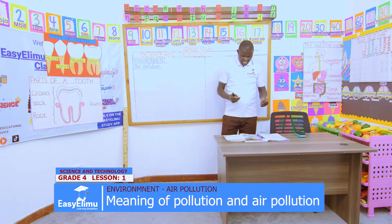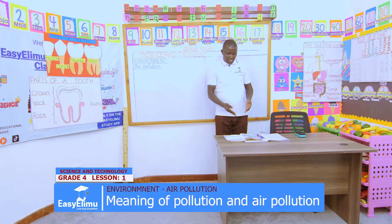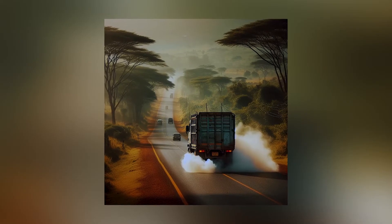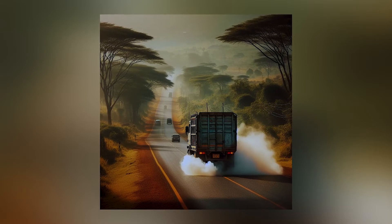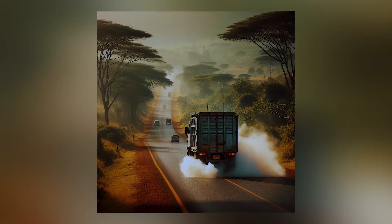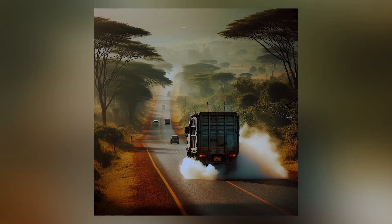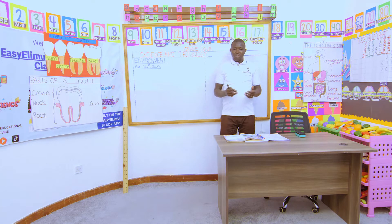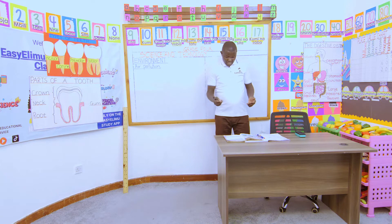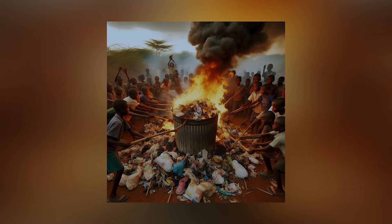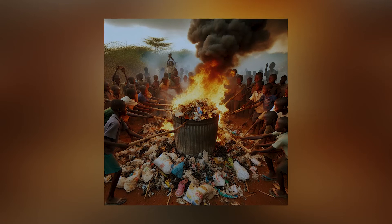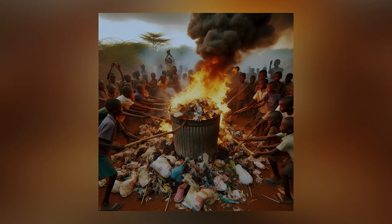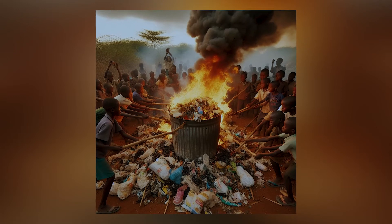And you, James, in the second picture — what can you see? A vehicle, but emitting smoke from the exhaust. That is correct. And you, Victoria, on the third picture — what can you see? Plastics piled up in a bucket, but they are being set on fire and they are emitting smoke. That is correct.